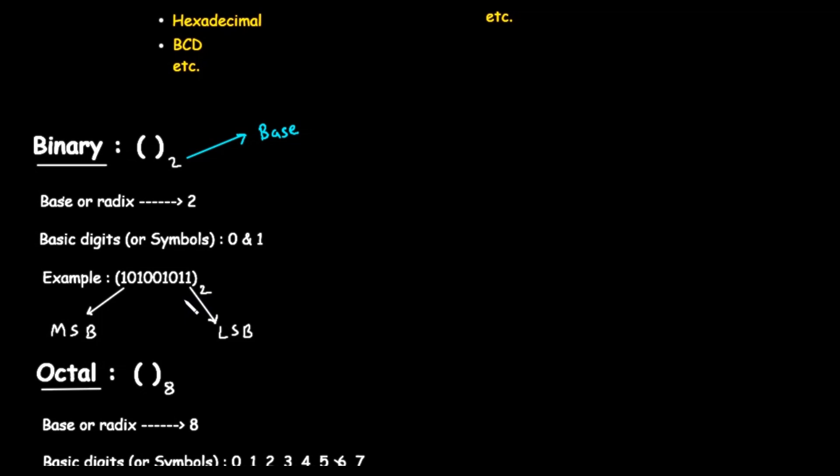In any binary number, we have two important positions. The leftmost digit is called the MSB, which stands for most significant bit. It holds the greatest weight or value. The rightmost digit is called the LSB, which stands for least significant bit, and it holds the smallest weight.